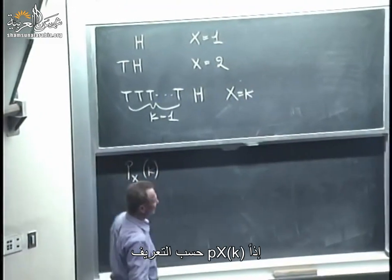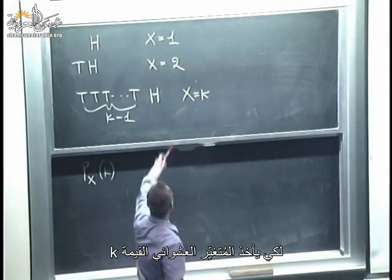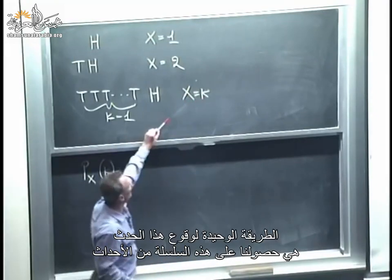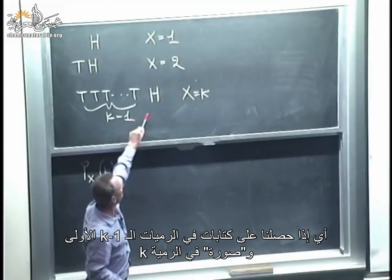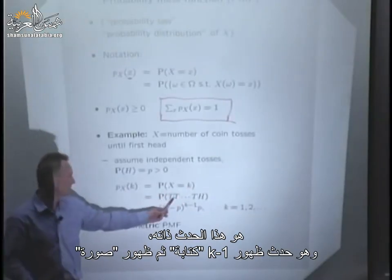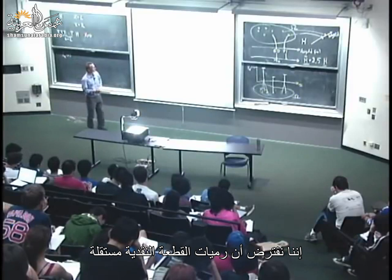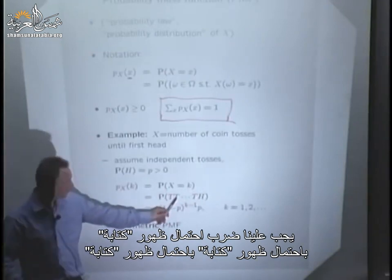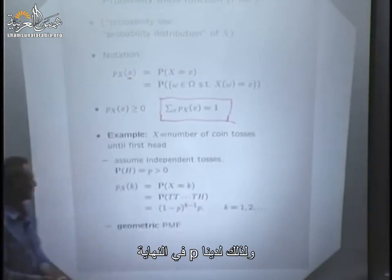To calculate the PMF: Px of k is, by definition, the probability that the random variable takes value k. For the first head to appear at toss k, we need k minus 1 tails followed by 1 head. Since coin tosses are independent, we multiply the probability of tails k minus 1 times by the probability of heads p, giving (1-p)^(k-1) * p. This is the formula for the so-called geometric PMF.